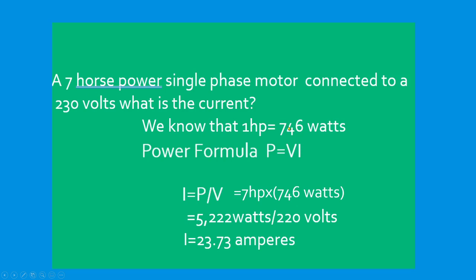We know that one horsepower is 746 watts. So we're just going to multiply. 7 times 746 equals 5,222 watts. We're going to divide it with the voltage with a result of 23.73 amperes.